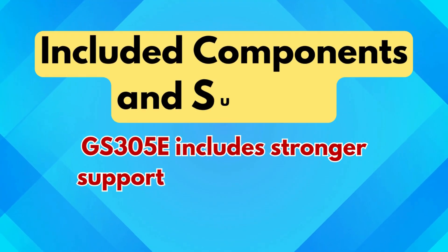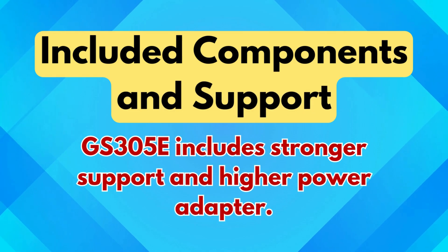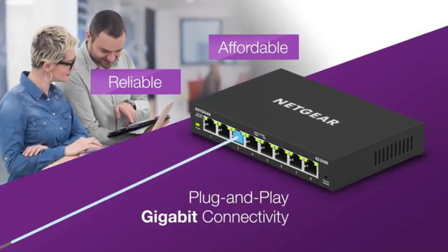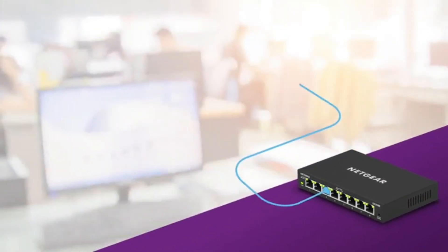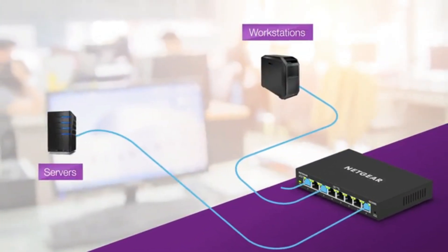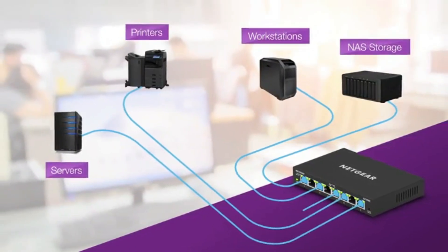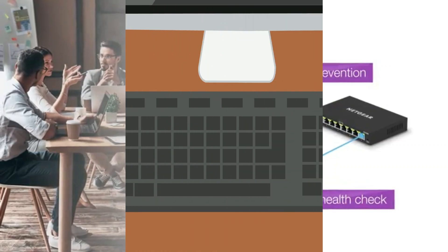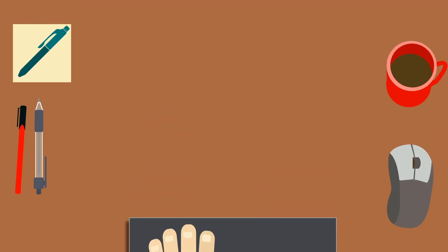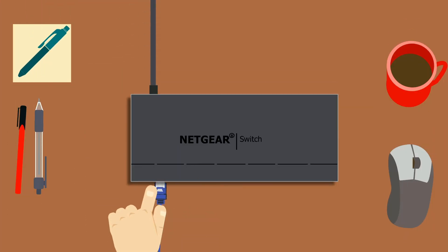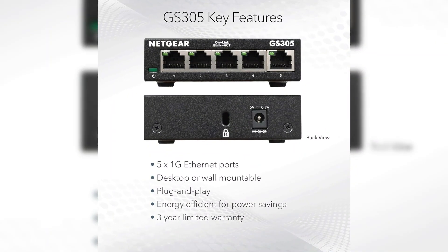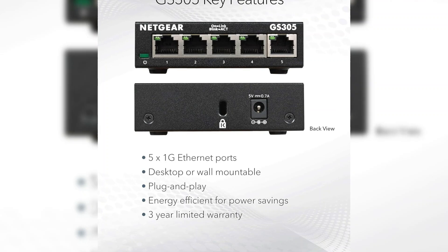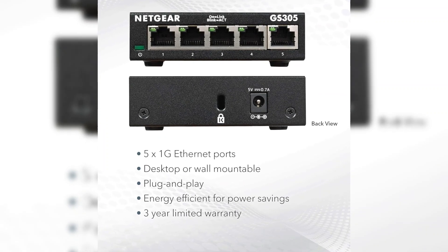Included Components and Support. The GS305e comes with a 12-volt, 1.0-amp power adapter and includes a longer support period: 5 years of hardware warranty and 90-day technical support. Meanwhile, the GS305 includes a power adapter suited for its lower needs, but comes with only a 3-year limited hardware warranty and no extended support features. This gives the GS305e the advantage in long-term reliability.